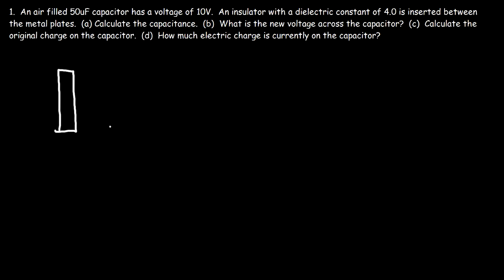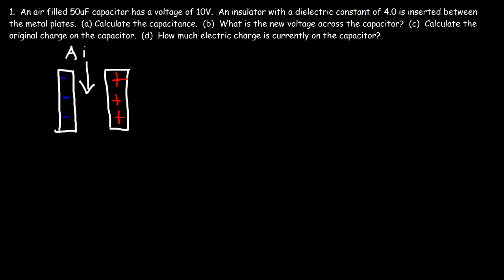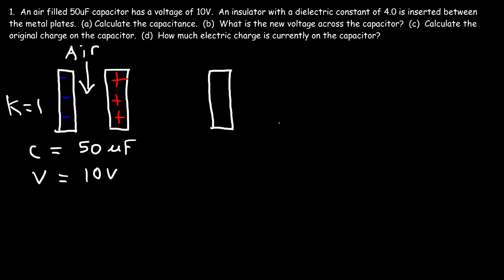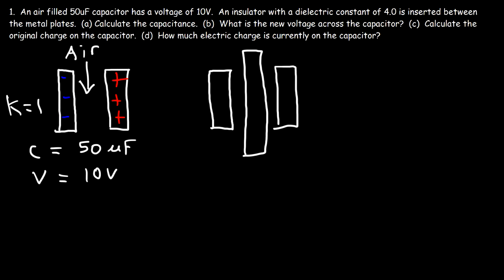This is going to be the original capacitor. Let's say one side is positively charged and the other plate is negatively charged. The original capacitor has no insulated material between the two plates — the only thing between them is air. The dielectric constant for air is approximately 1. For this air-filled capacitor, the capacitance is 50 microfarads and the voltage across the plates is 10 volts. Now what's going to happen if we put an insulated material in between the two plates? What's going to happen to the capacitance and the voltage — will they increase or decrease?